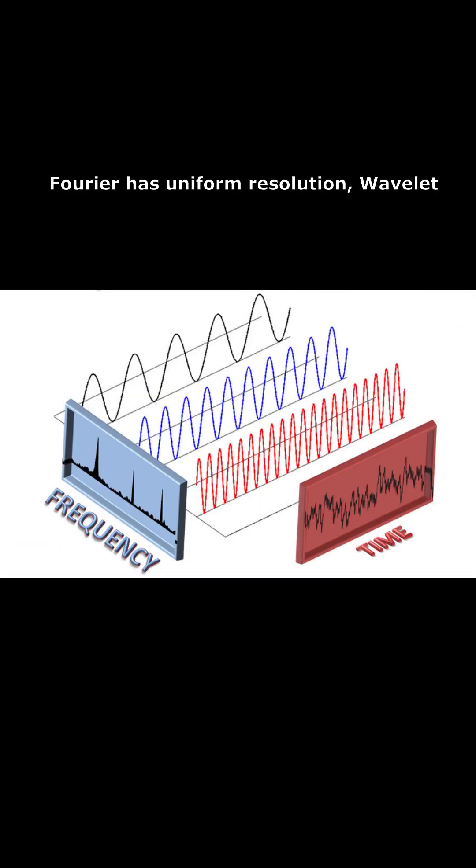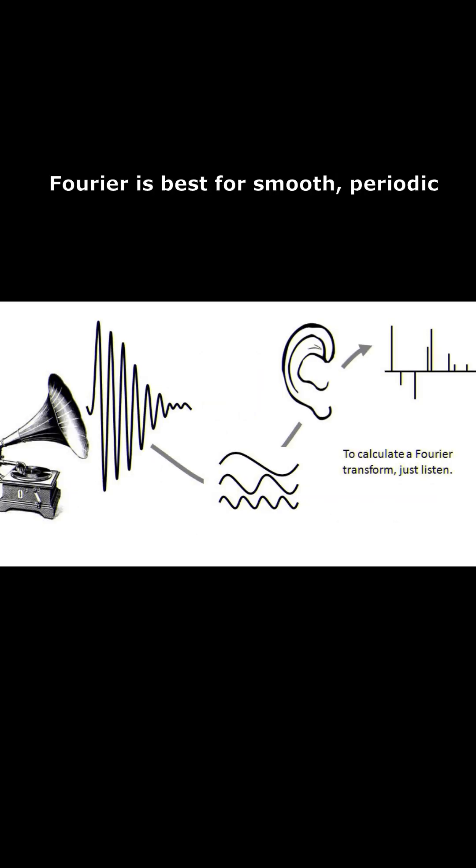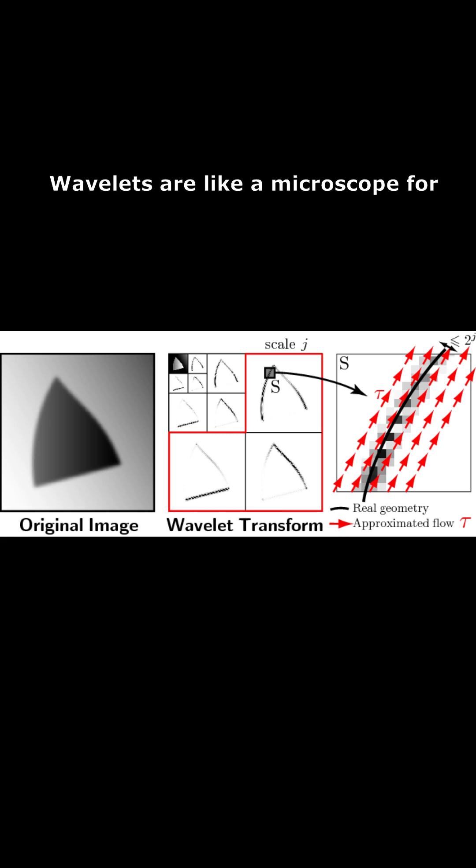Fourier has uniform resolution. Wavelet adapts resolution: high frequency equals fine detail, low frequency equals broad overview. Fourier is best for smooth periodic signals and sound analysis. Wavelet works best for transient signals: electrocardiography, image compression, and denoising.